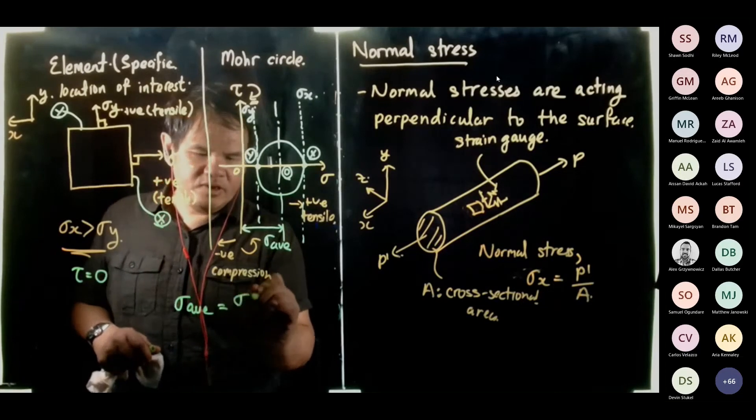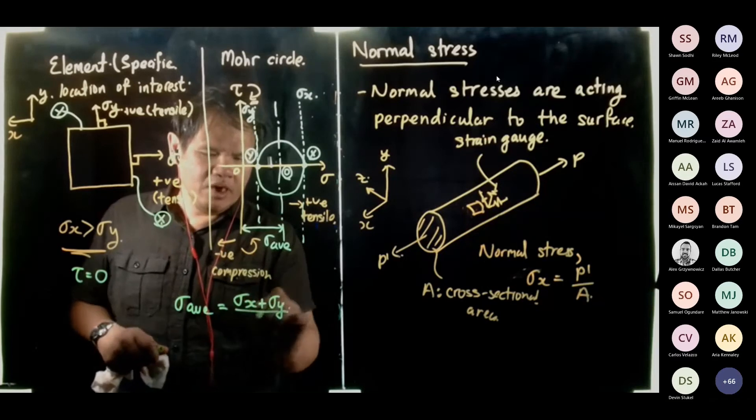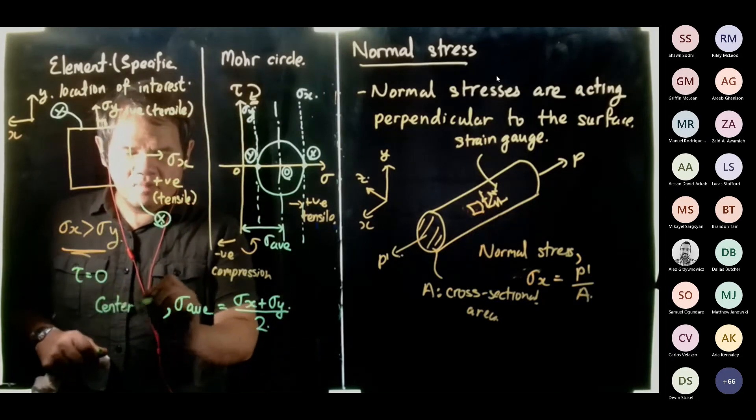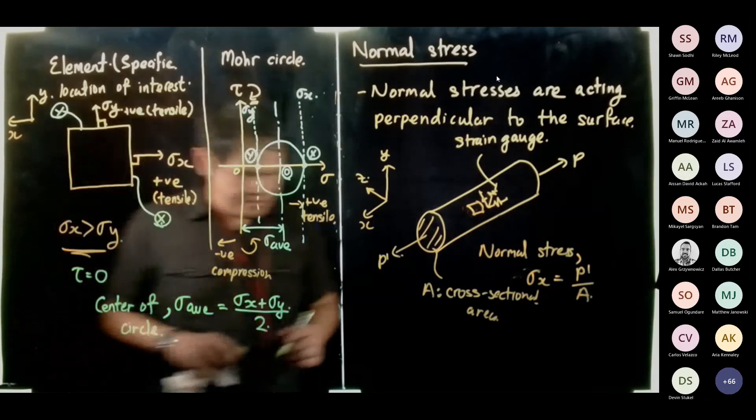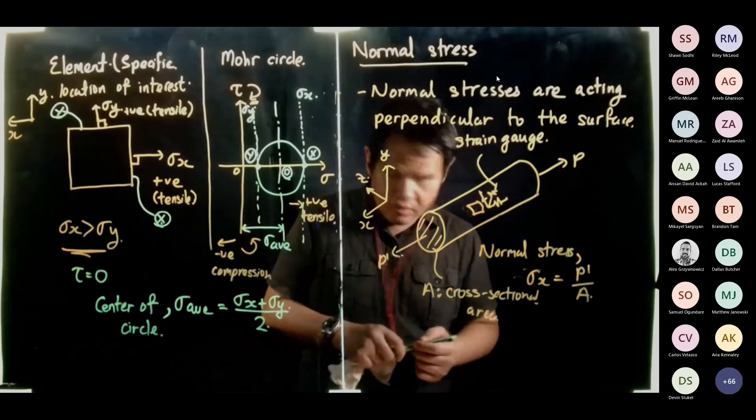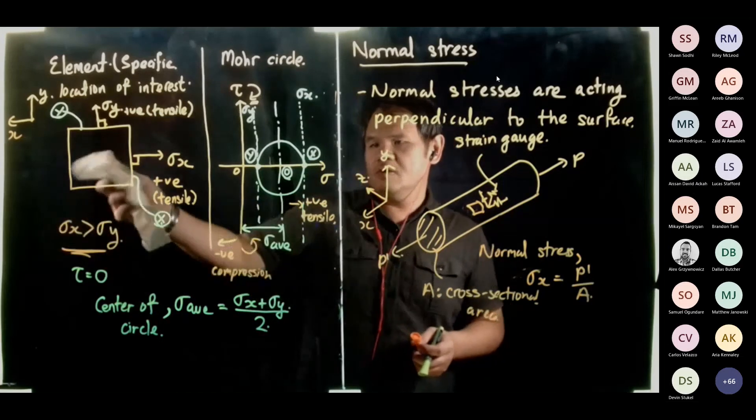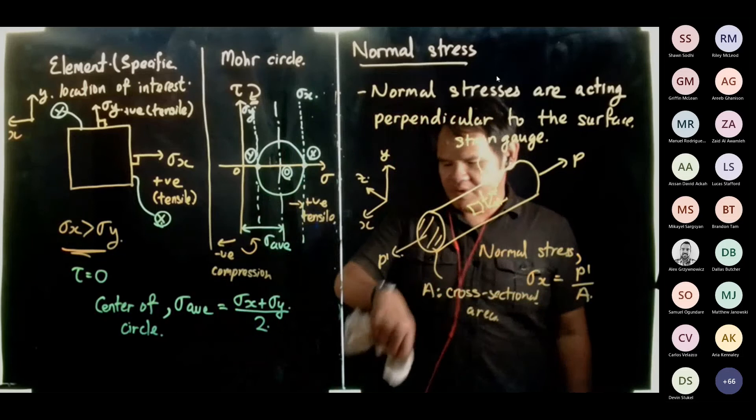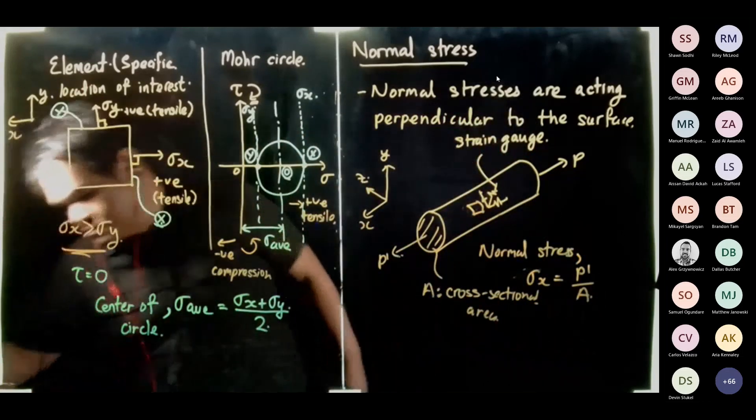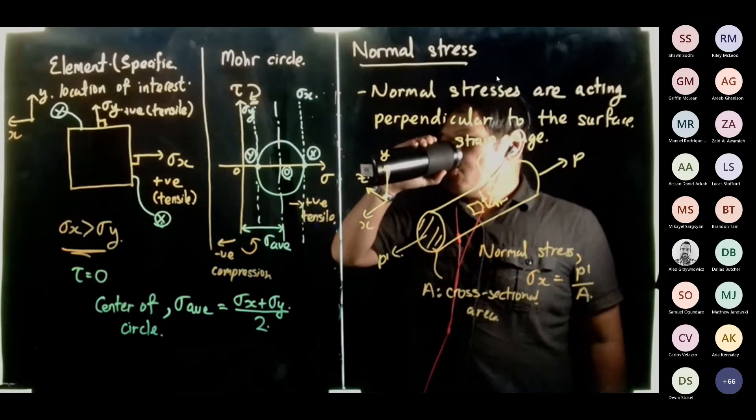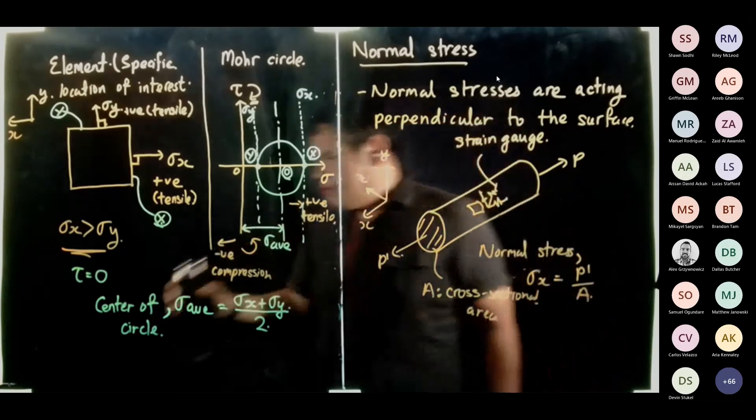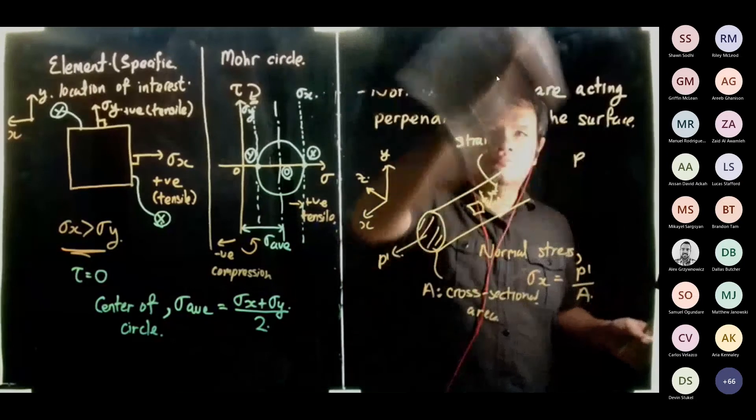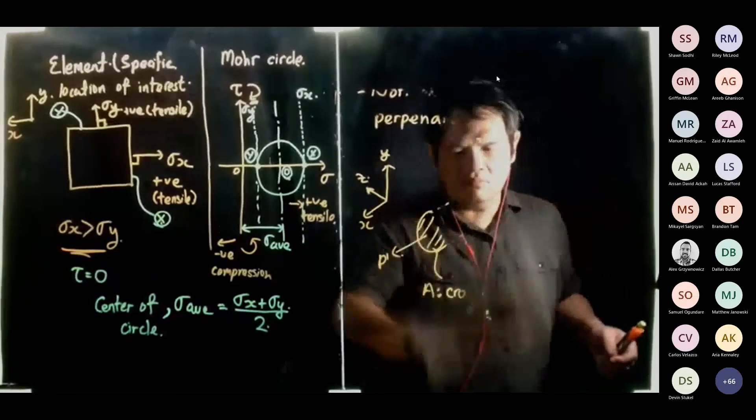Stress average can be determined by just doing a very simple sum: stress x plus stress y, divided by 2. And your stress average is also known as the center of the circle. That is your Mohr circle. This is your element, you relate to your Mohr circle. I'll let you guys have like one minute to copy.